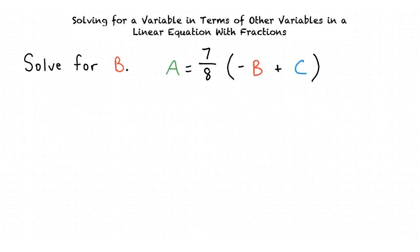Our problem asks us to solve for b in the equation a equals 7 eighths times the quantity negative b plus c. The goal of this problem is to get b all by itself.